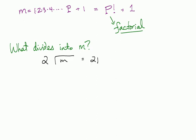2 into m, 2 into 2 times a bunch of stuff plus 1, well, you can cancel those two. You end up with a remainder of 1 because p factorial is a multiple of 2. That means 2 divides into p factorial. But I added 1, so I have a remainder of 1. So, 2 doesn't divide into m.